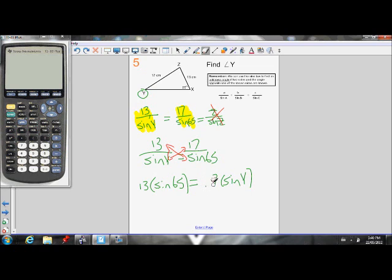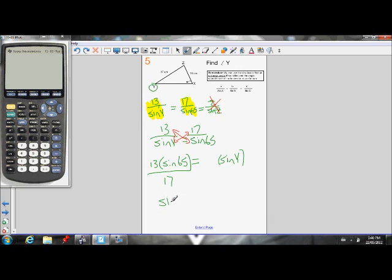Get sine Y by itself so that we can solve for Y eventually. I'm going to divide the 17 to the other side. Because 17 is being multiplied on the right side, that means on the left side it is going to be divided. So I now know sine Y is equal to, let's put this in on the calculator, 13 sine 65, close my bracket, divide by 17.